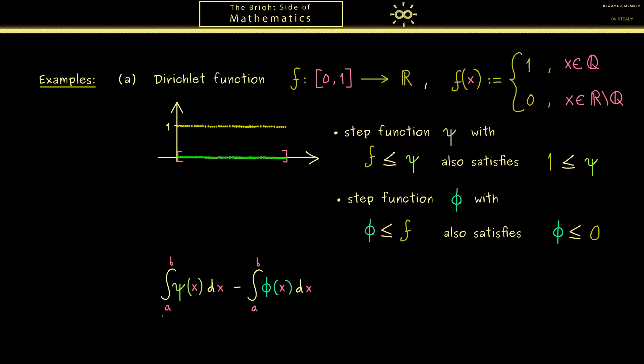Here again in the difference this first part here is always greater or equal than 1. And the second part without a minus sign is always less or equal than 0. Hence the difference of both numbers is always greater or equal than 1. Okay there you see this was our first counter example.